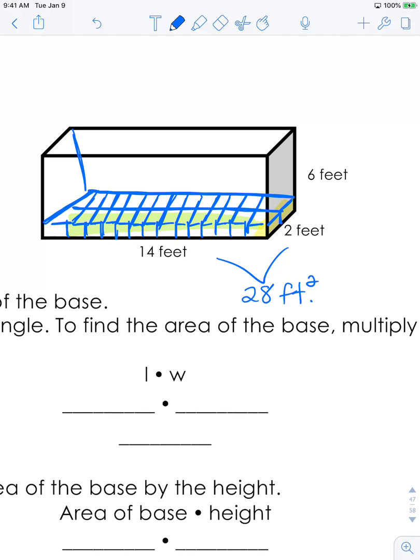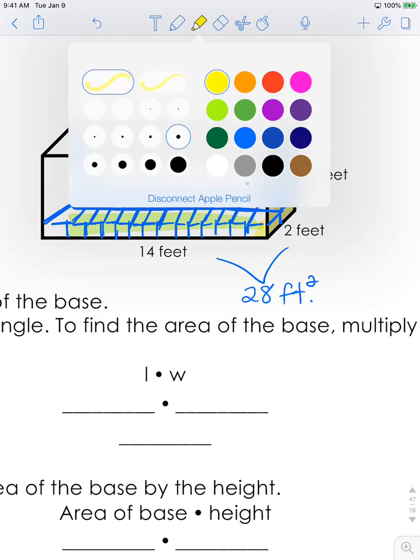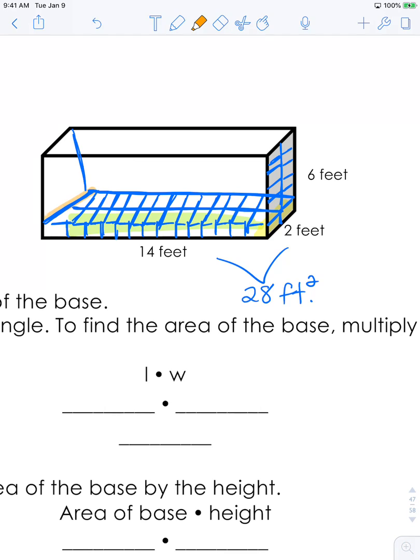Now this also goes up six feet high. So think about this base layer being stacked on top of itself. So this base layer here being stacked on top of itself six times. So you have these 28 cubes here that are going to be stacked on top of each other six times.